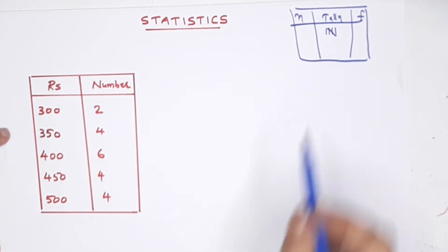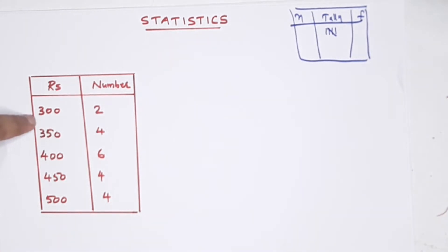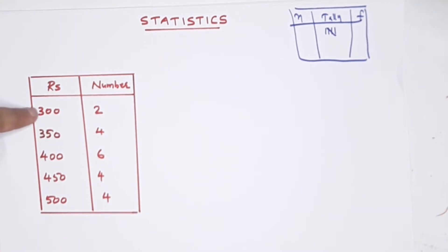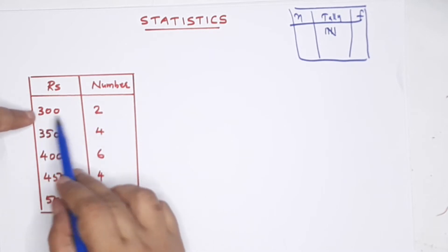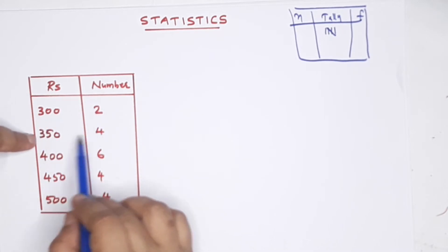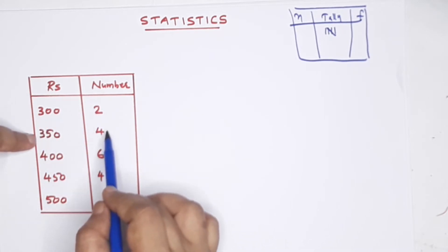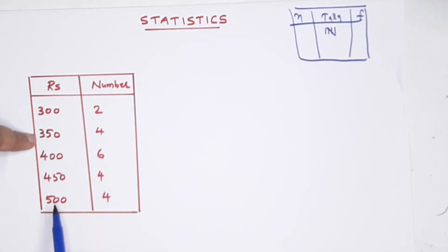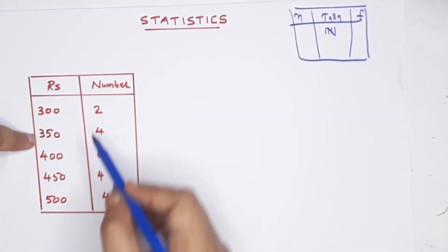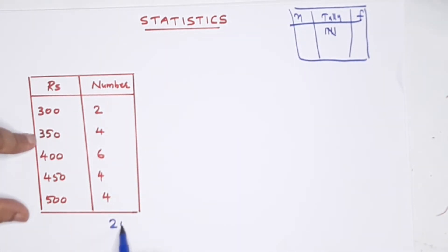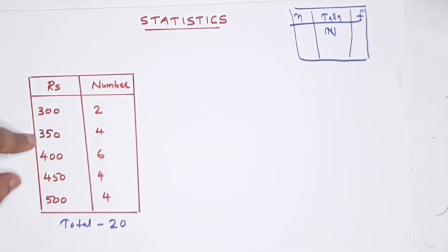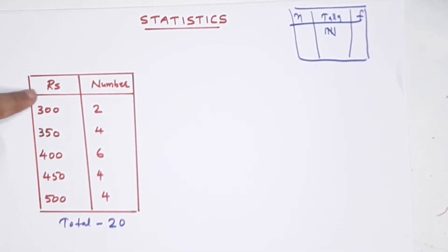This is the first worked example. Here we have 300 appearing 2 times, 350 appearing 4 times. Then we add the total number - the total is 20. This total is 20 numbers. There are daily wages - two types of daily wages.